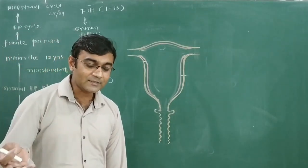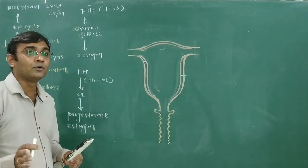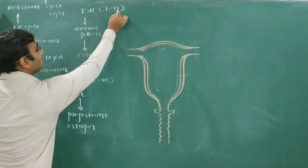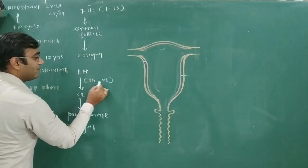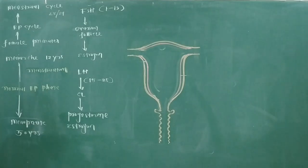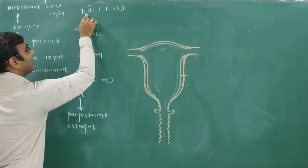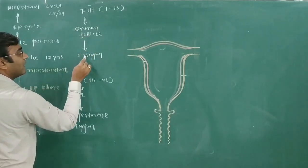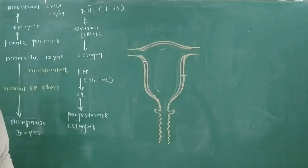In the last lecture we completely learned about the two phases of the ovarian cycle. During days 1 to 13, FSH increases and stimulates the growth of the ovarian follicle, and the ovarian follicle produces estrogen.